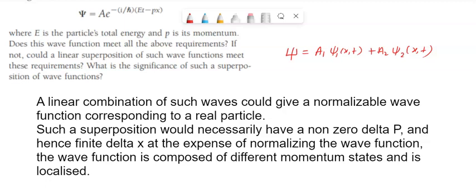Such a superposition would necessarily have a nonzero delta p and hence finite delta x at the expense of normalizing the wave function. The wave function is composed of different momentum states and is localized.